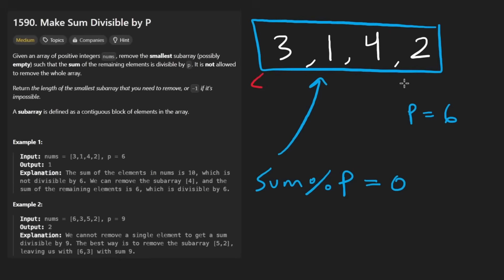So in this first example, it looks like it is just one. If we were to remove this four, we would see that the remainder is four plus two, that's six, which is divisible by six.